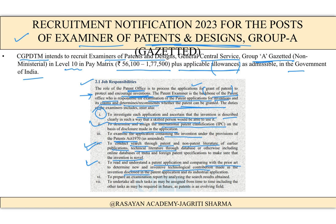They check what the inventive technological contribution is in the patent being applied for, prepare an examination report by analyzing search results, and undertake all tasks assigned from time to time. Basically, the role is to go through the application, conduct research, determine if the invention is novel, ensure the application follows all government provisions, and then grant the patent.